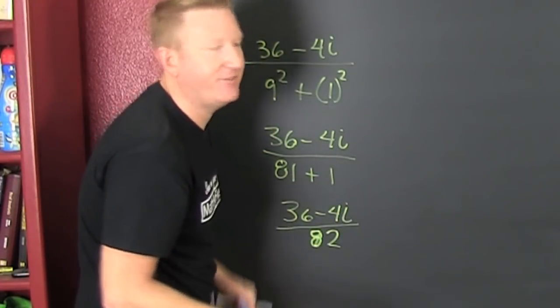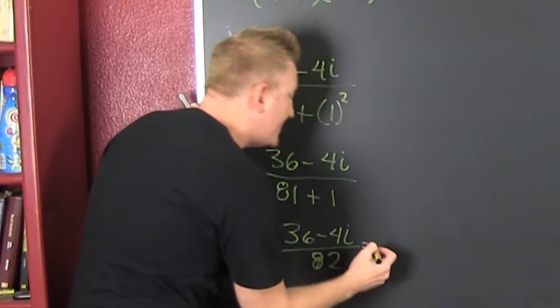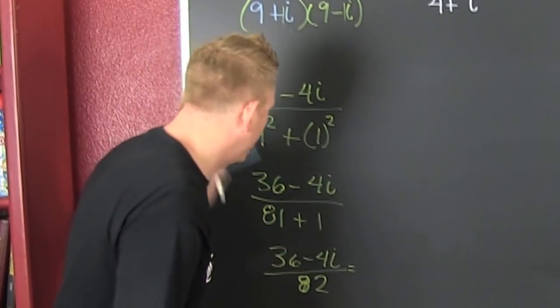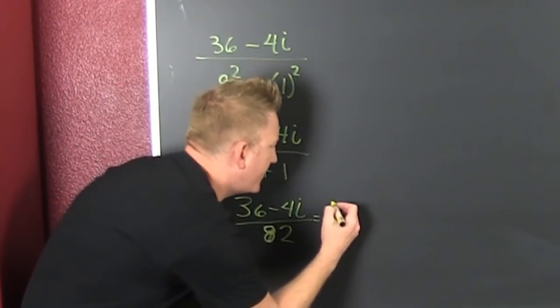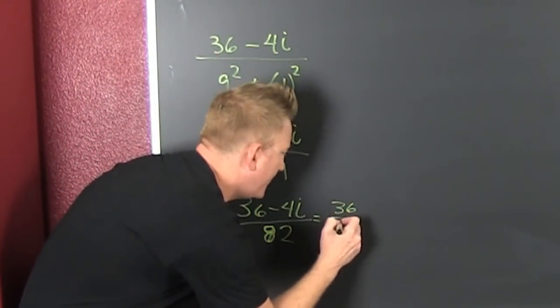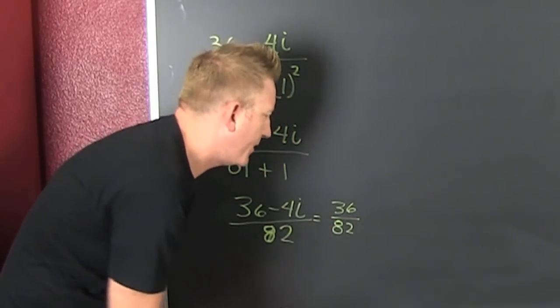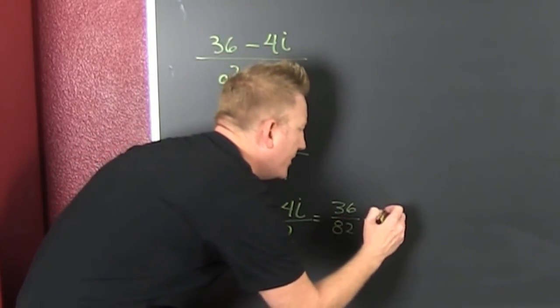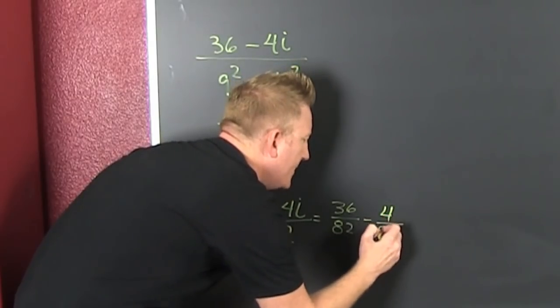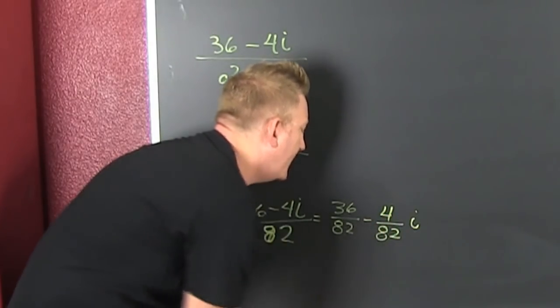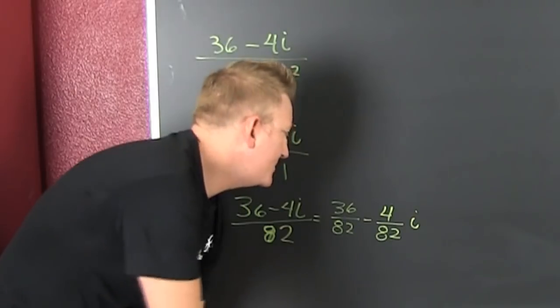But you're not going to leave it like that. Why? Because it needs to be an A plus Bi form. So that's a 36 over 82. You got to separate the real part from the imaginary part. 4 divided by 82i.